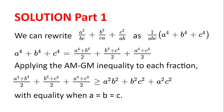Solution. We can rewrite A cubed divided by BC, plus B cubed divided by CA, plus C cubed divided by AB as 1 divided by ABC multiplied by A to the power of 4 plus B to the power of 4 plus C to the power of 4. We multiplied the first fraction by A, the second by B, and the third by C.